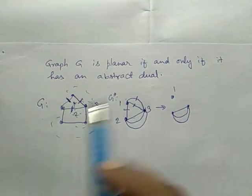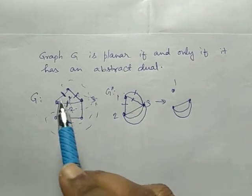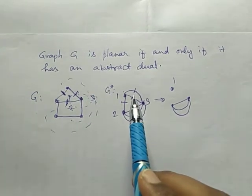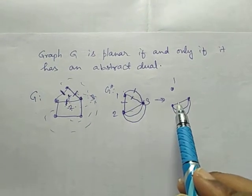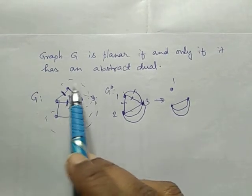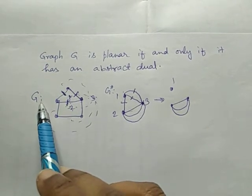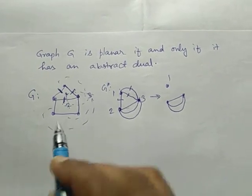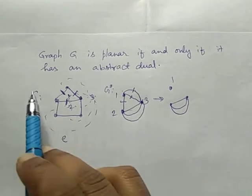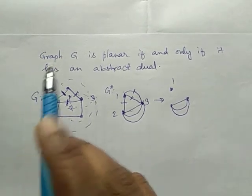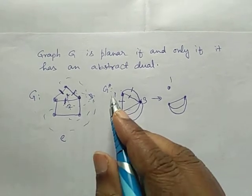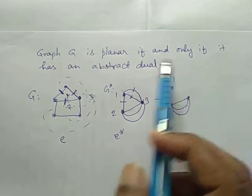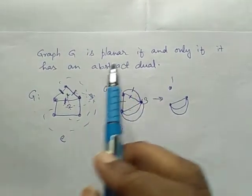The edges which form a cycle in G — removal of the corresponding edges in G star leaves the graph disconnected. This means the edges which form a cycle in G will form a cut set in G star. So if the graph G is planar, it should have an abstract dual, and if G has an abstract dual, then it should be planar.